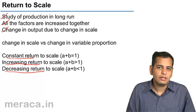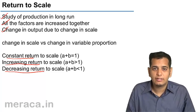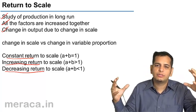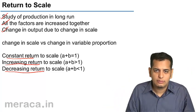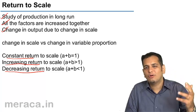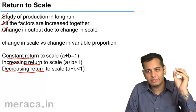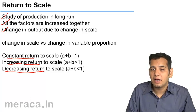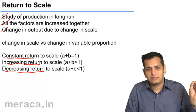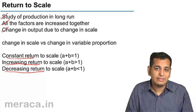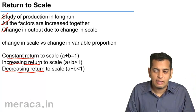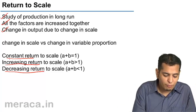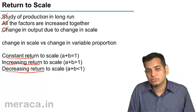The law of constant returns states that the level of output increases in proportion to the level of inputs. That means if I increase the level of inputs — my labor, my capital, if I purchase more land — I will be able to increase my production, but by a similar percentage to which I have increased my inputs. If I increase my inputs by 50% and the output also increases by 50%, I am operating under the law of constant returns to scale.